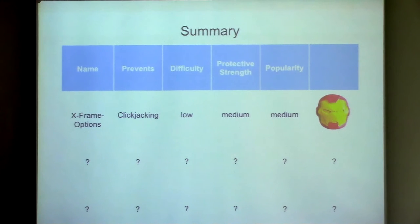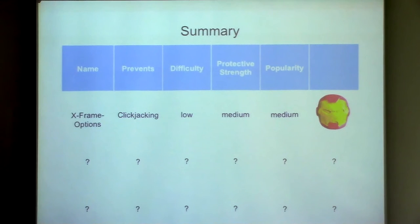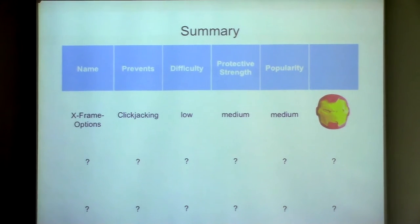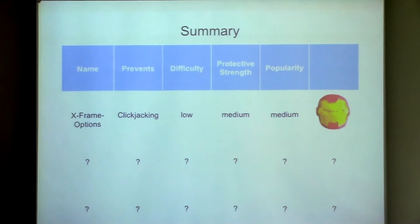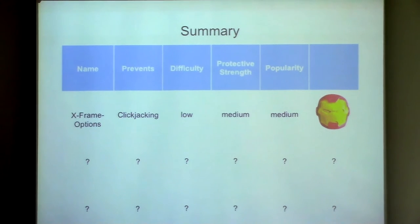I like to use superhero icons to make it more memorable — we're going to call this Iron Man. On the scale of things, the difficulty in implementing this is low, but the protective strength is medium. It's almost nothing to get in place, and in terms of popularity, almost nobody uses it currently. But of places that do use any of these, this is pretty common actually. Low level of effort, big return on investment.